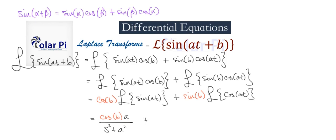we have sine of b, a constant, times the Laplace transform of cosine of at is s divided by s squared plus a squared, which is the same as s squared plus a squared in the denominator.